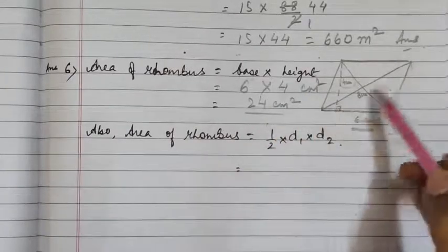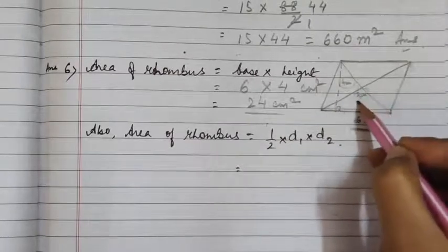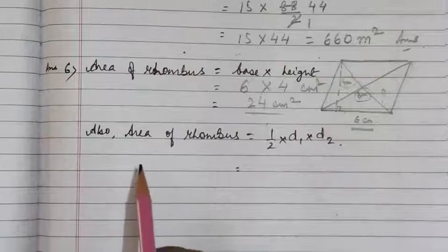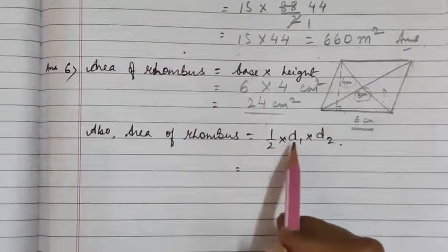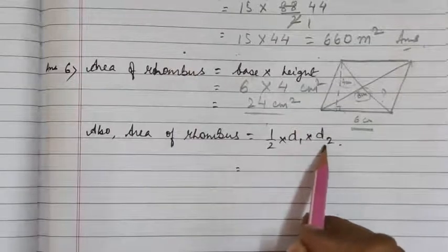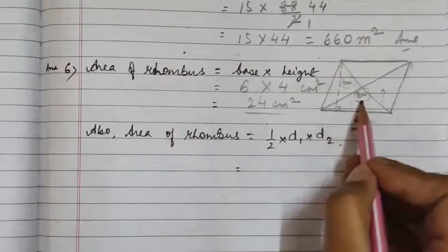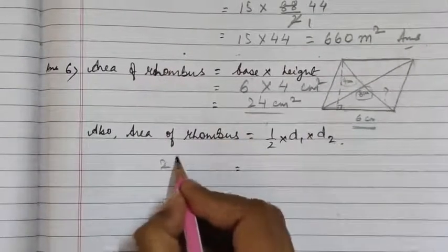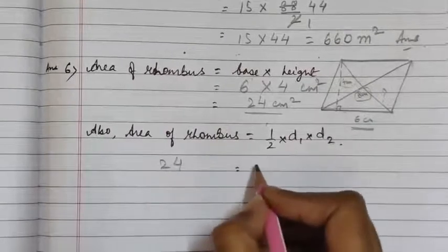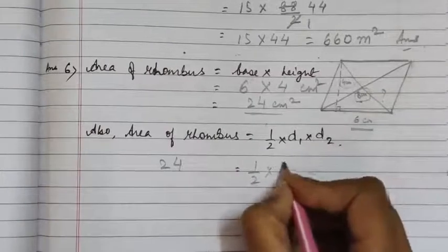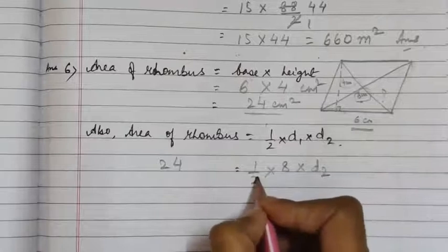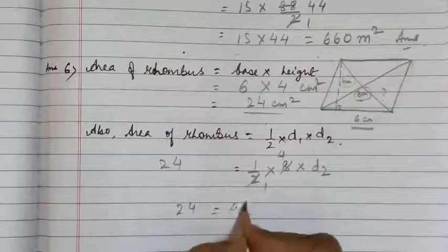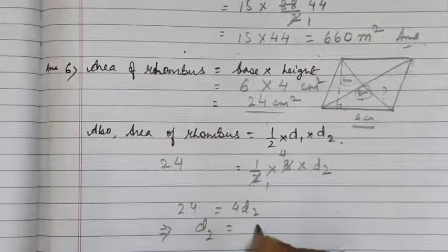In this rhombus, one of the diagonals has been given as d1 = 8 cm and we have to find the length of the other diagonal d2. We know that area of rhombus = ½ × d1 × d2. The area we have found is 24 cm², so: 24 = ½ × 8 × d2. This simplifies to 24 = 4 × d2, therefore d2 = 24 ÷ 4.